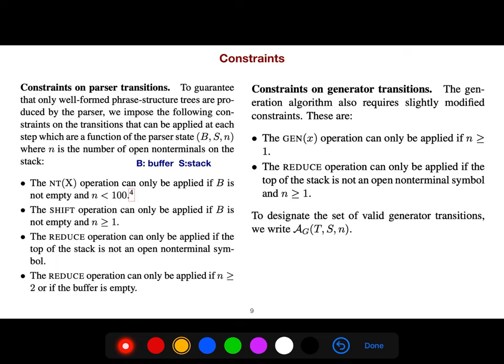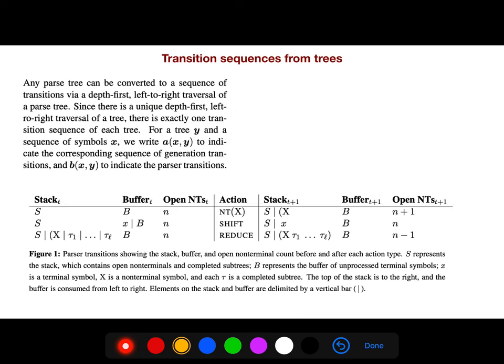And so, you're using some constraints. Constraints on parser transitions. For example, the NT operation can only be applied if buffer is non-empty. Shift can only... So, these are some reasonable things. So, or even in the generation. So, these are reasonable constraints that we have to apply. Otherwise, it doesn't work.